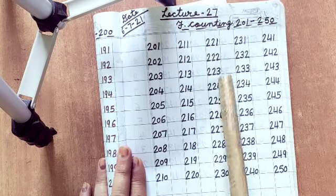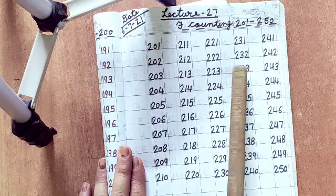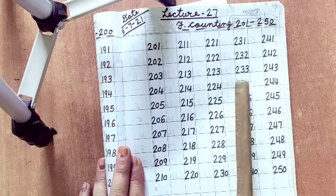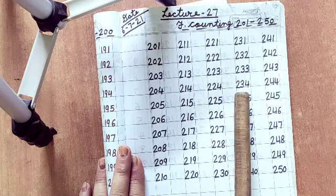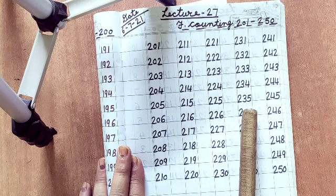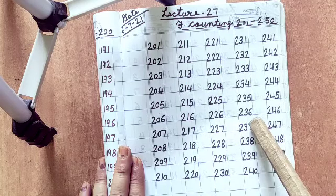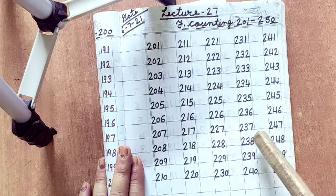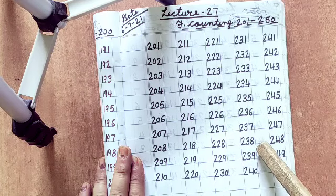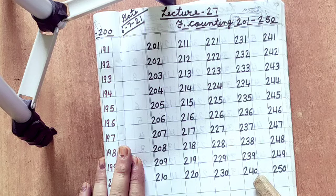After 230 what will come? 231, 232, then 233, then after 234, 235. After 235 what will come? 236. Very good. 237, 238, then after 239, 240.